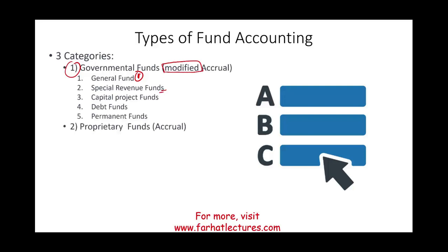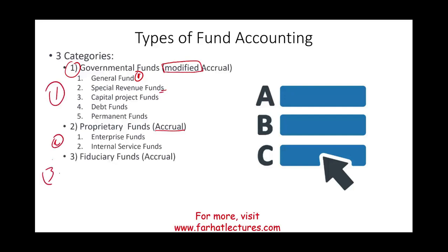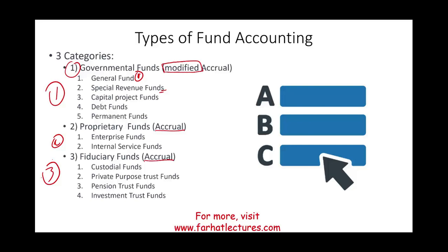The second category is proprietary funds, which use accrual accounting. Under proprietary funds, there are two types: enterprise funds and internal service funds. The third category is fiduciary funds, which also use accrual accounting, and includes custodial funds, private purpose trust funds, pension trust funds, and investment trust funds.